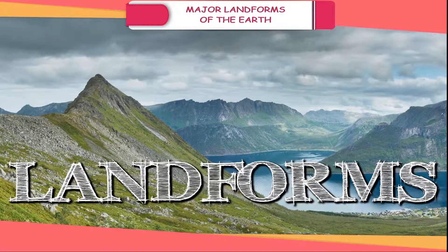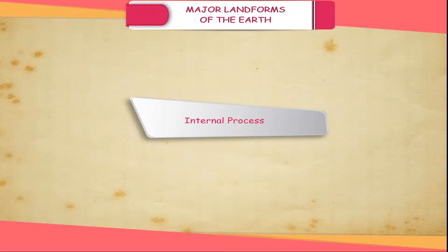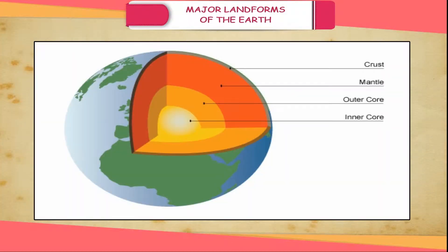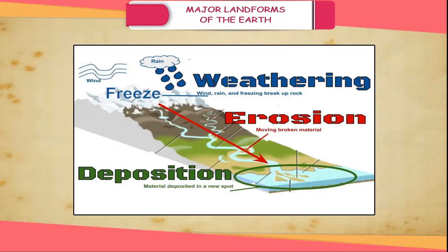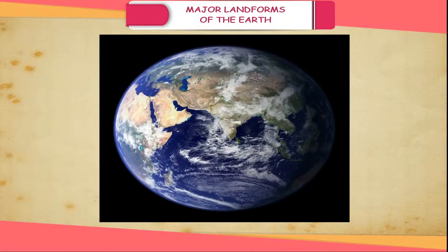These landforms are made by two processes. First, the internal process that operates inside the Earth — it leads to the upliftment and sinking of the Earth's surface at several places. Second, the external process that operates on the surface of the Earth — it is the continuous wearing down and rebuilding of the Earth's surface.